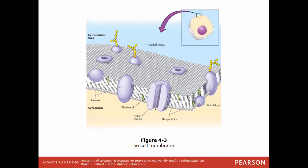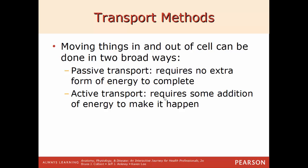The cell membrane has a phospholipid bilayer, with hydrophilic heads facing the water outside or inside the cell, and hydrophobic tails facing each other. This bilayer circles all the way around the cell. Within the membrane you also find cholesterols, proteins — some going all the way through as transmembrane proteins and some only partway through — and sugars on the surface. These transmembrane proteins are very important for getting stuff in and out of the cell.